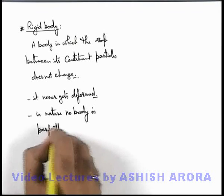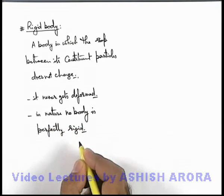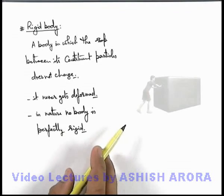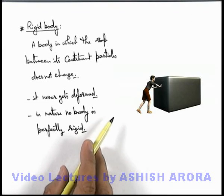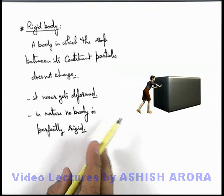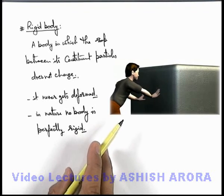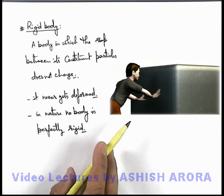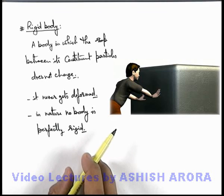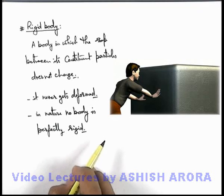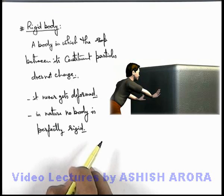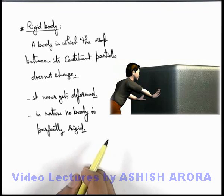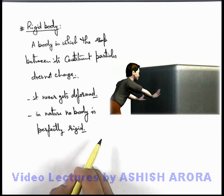We can understand this with the help of a physical situation. Here we can see there is a rigid body clamped on a surface, and if a boy comes and tries to push it, no deformation will take place in it. Whereas if the body is elastic, then due to application of external force the body will get deformed. So in a rigid body no deformation is possible, and such bodies are called rigid bodies.